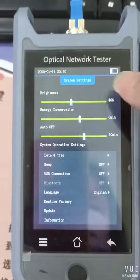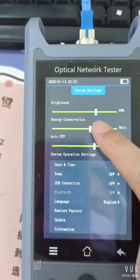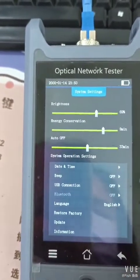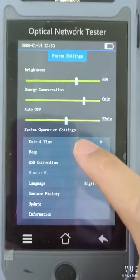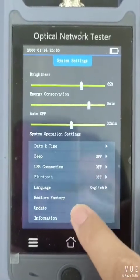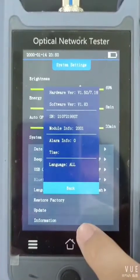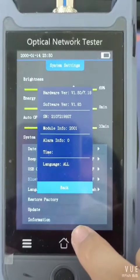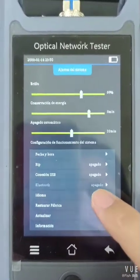You can change the brightness, the energy conservation, and the auto-off time, and other basic settings like day and time, or can check the information of the machine, like hardware or software version and the SN code.